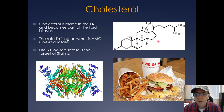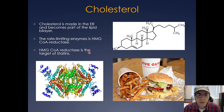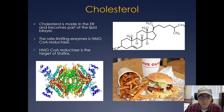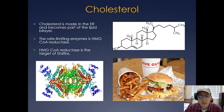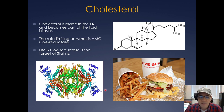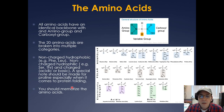Some people with high cholesterol take statins, which inhibit an enzyme called HMG-CoA reductase — that's the target of statins. HMG-CoA reductase is the rate-limiting enzyme in cholesterol synthesis, so by inhibiting it you can lower people's cholesterol.